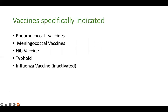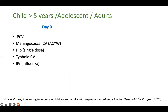Which vaccines are specifically indicated? These are pneumococcal, meningococcal, Hib, typhoid, and influenza vaccines. Influenza vaccine is recommended because post-influenza infections — especially secondary infections with Streptococcus pneumoniae — are common. It is important to give influenza vaccine yearly as well.